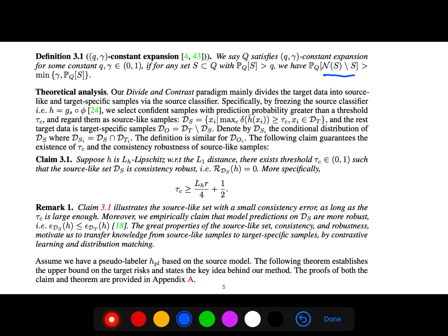The theoretical analysis shows that our Divide and Contrast paradigm mainly divides the target data into source-like and target-specific samples. We freeze the source classifier and select the confident samples with prediction probability greater than a threshold, regarding them as source-like samples.